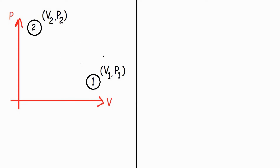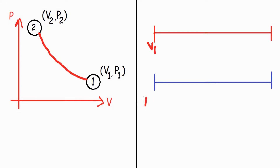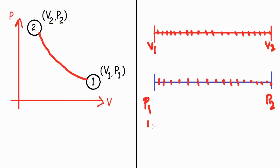For a reversible process, that is not the case. In order to move from 1 to 2, we need to cover all the states present between 1 and 2 in the PV diagram. Consider a real number scale: from V1 to V2, there are infinite real numbers, and from P1 to P2 — say 1 atmosphere to 2 atmospheres — there are also infinite pressure values. All these possible combinations must be covered to move from 1 to 2 by a reversible process, requiring infinite number of steps.